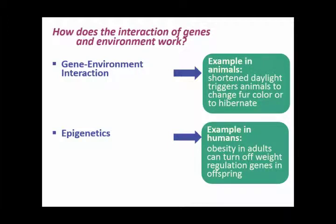Girls are born with all the eggs they're ever going to have, so things that happen in the womb are more important in shaping the DNA of girls' eggs. With age and exposure to certain toxins, the DNA in eggs can deteriorate or change. Men, when they mature, start making sperm fresh all the time, so they're more acutely influenced by what's going on at the moment — like their diet, exposure to toxins, drug use, and age. Those things can affect the way their sperm is made and then have an impact on their offspring.